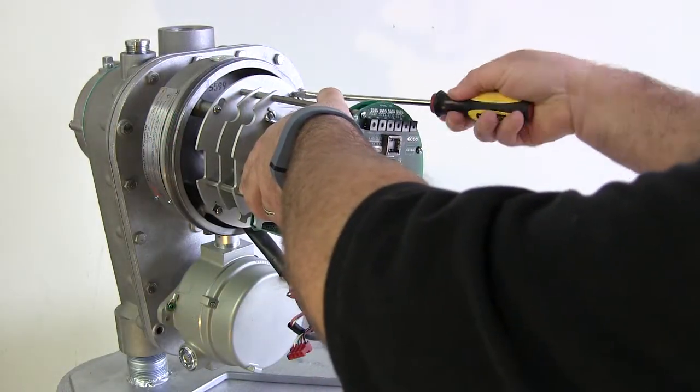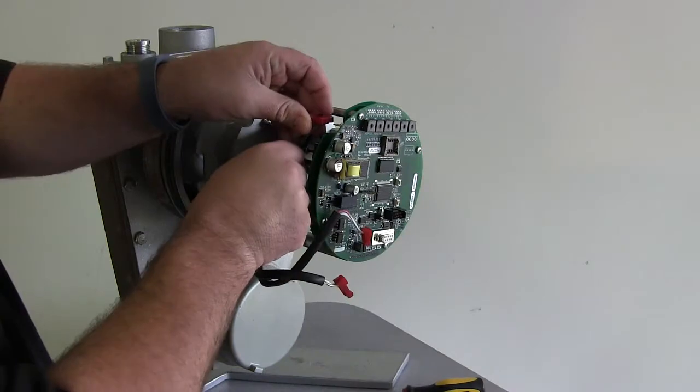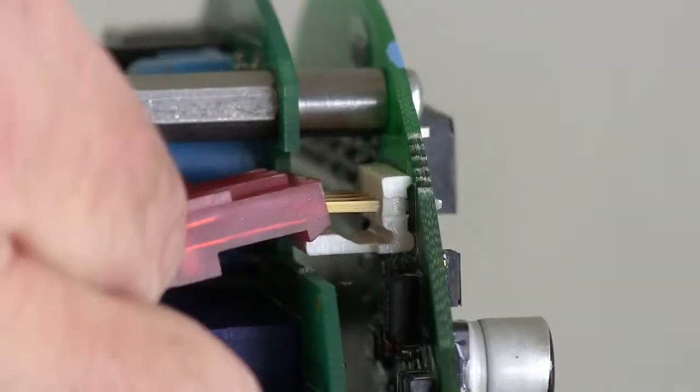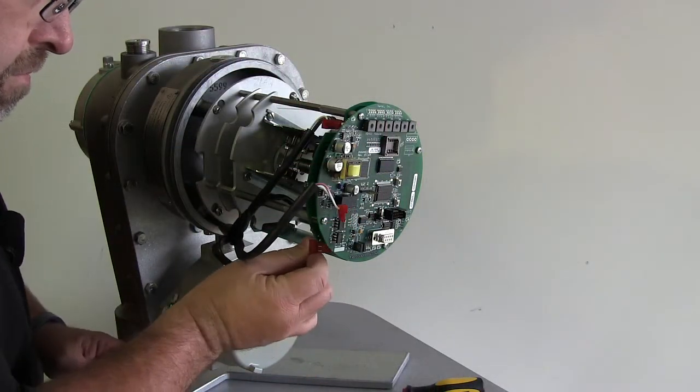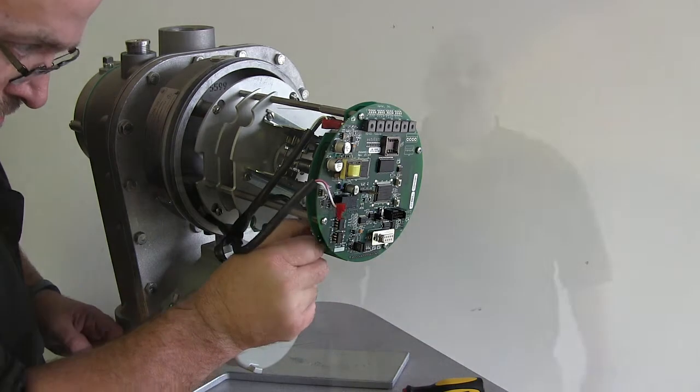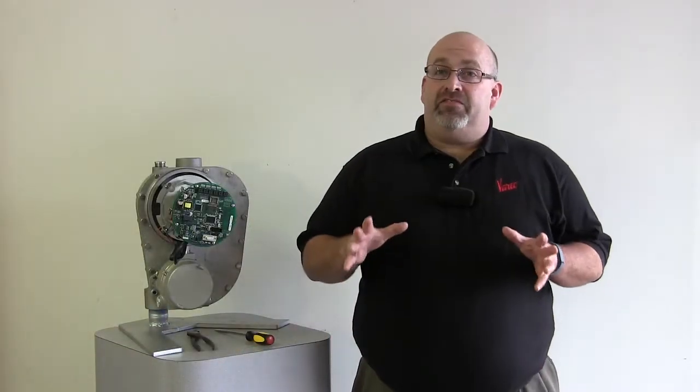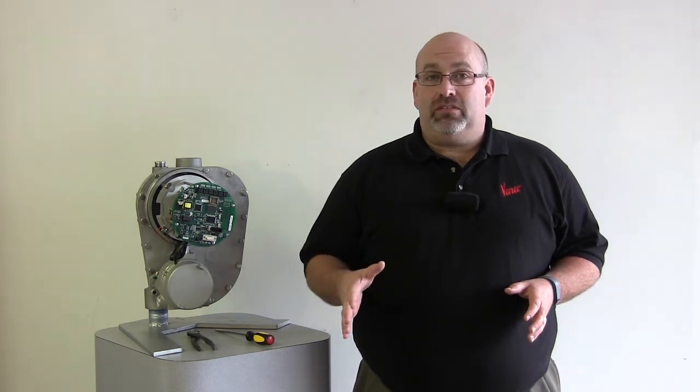Fasten down the four screws and plug the wired connectors into the plugs on the power and communications boards. We now need to set the configuration to match the old encoder using the switches on the communication board. We'll cover this in our next video. Thanks for watching.